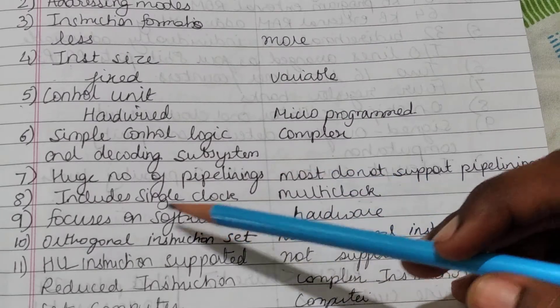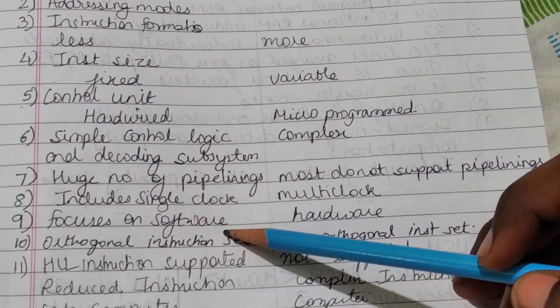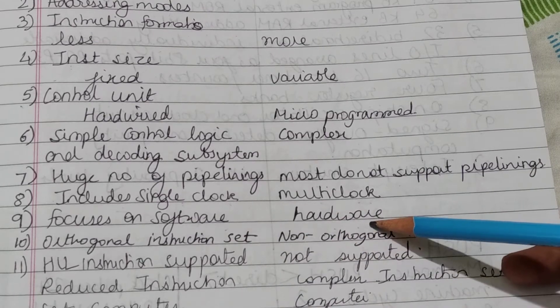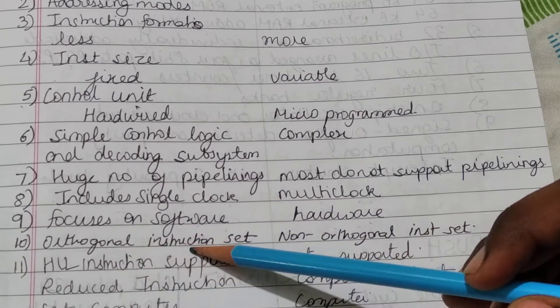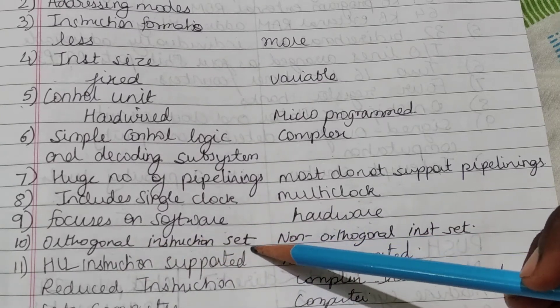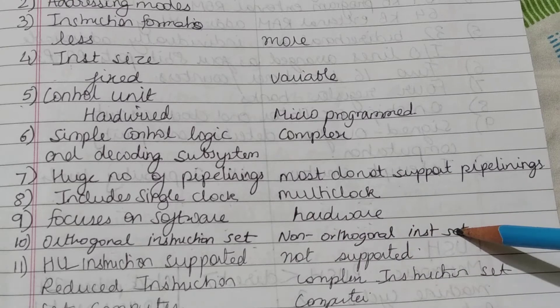RISC focuses on software whereas CISC focuses on hardware; it is hardware-centered. RISC has an orthogonal instruction set, whereas CISC has a non-orthogonal instruction set.